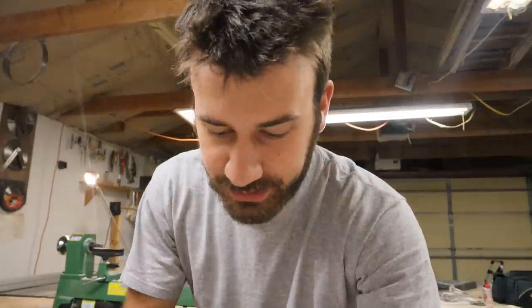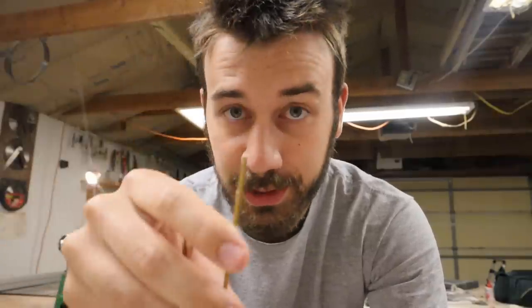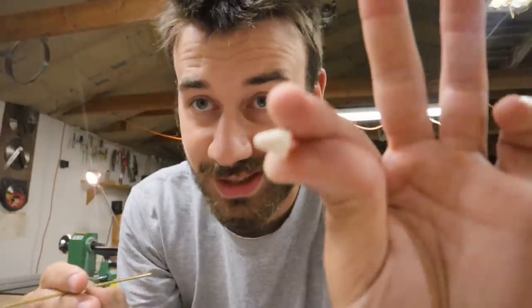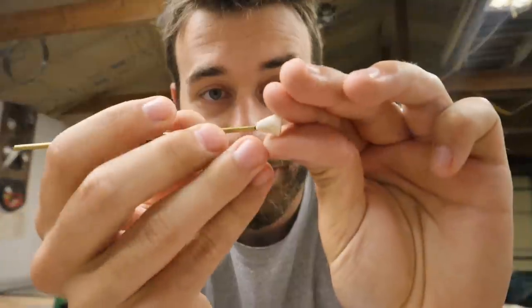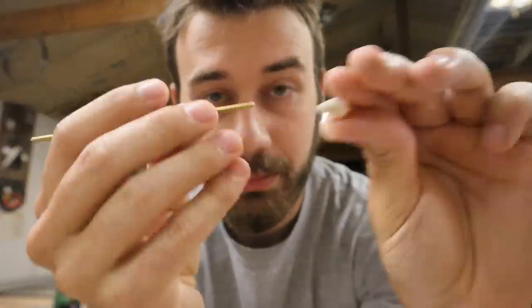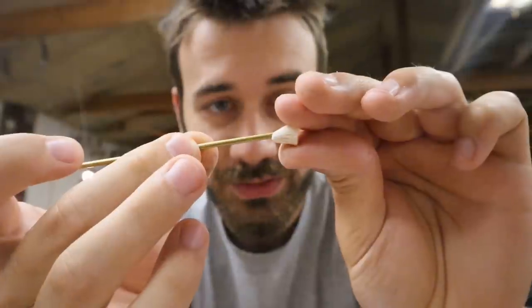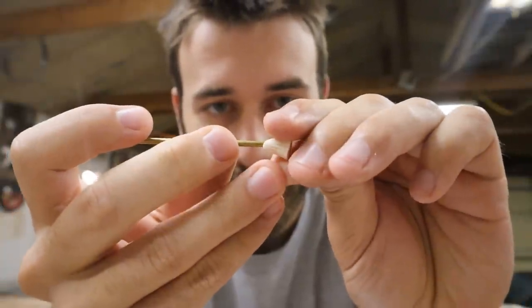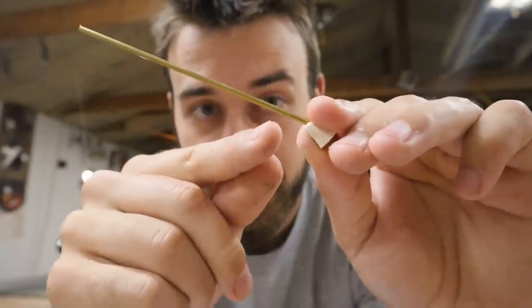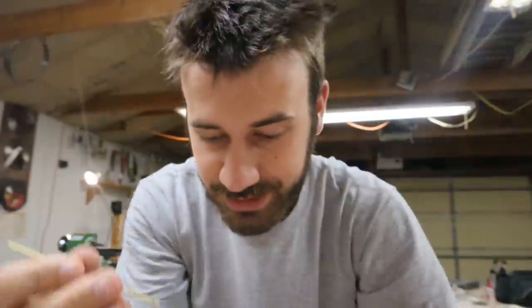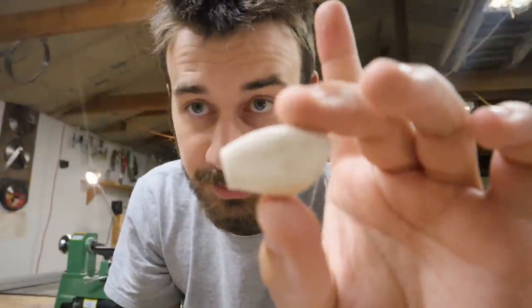What this bait definitely needs for the propeller on the back to spin well is a bushing straight through the center of this tiny piece. So I need to drill out the hole to the correct size and cut this bushing, which is just a brass tube, a very small brass tube, and insert it into this piece. It's gonna stick out the back a little ways and that's what the wire is gonna go through.